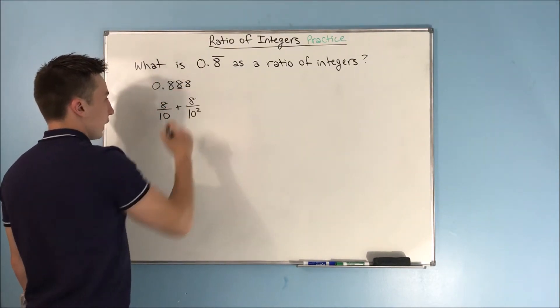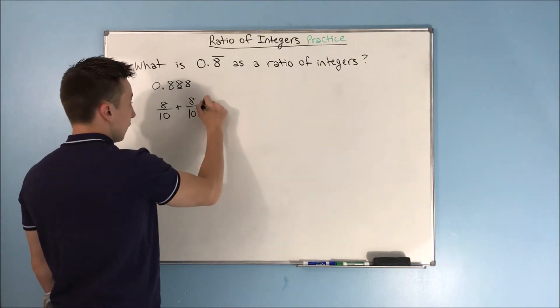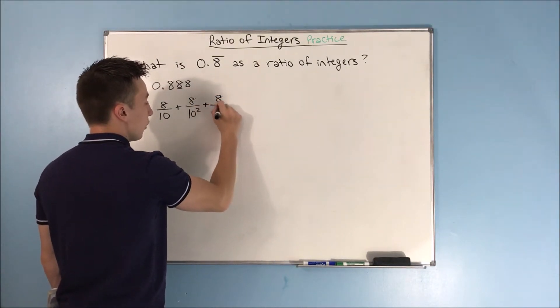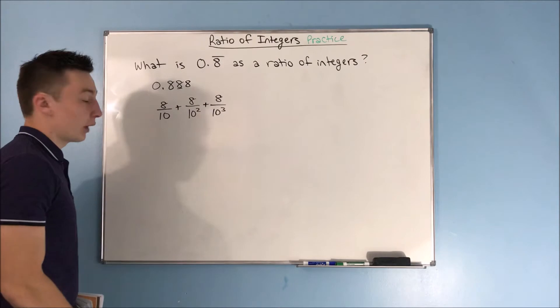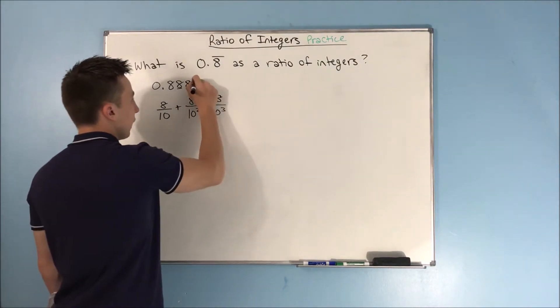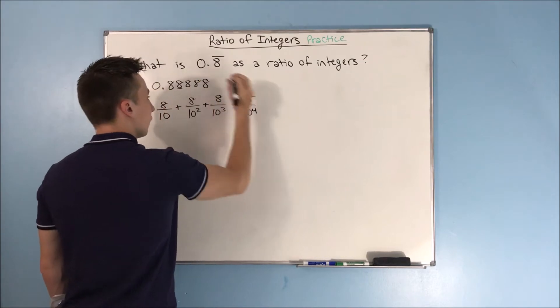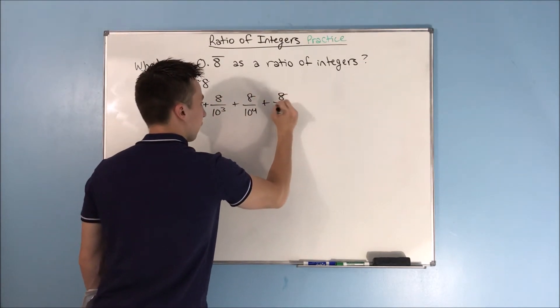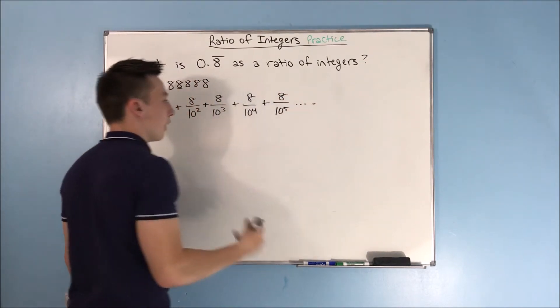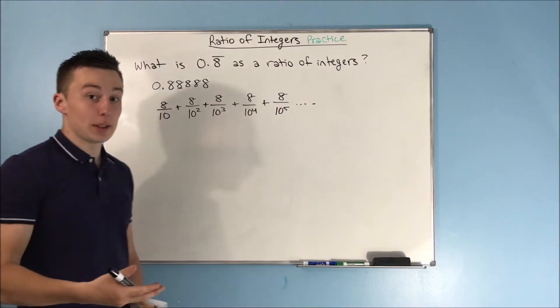Well, what about another 8? That's going to be 8 over 10 cubed. And so on and so forth. We add another 8, that's 8 over 10 to the 4th. Another one, that's 8 over 10 to the 5th. And so on, and that is our infinite geometric series.